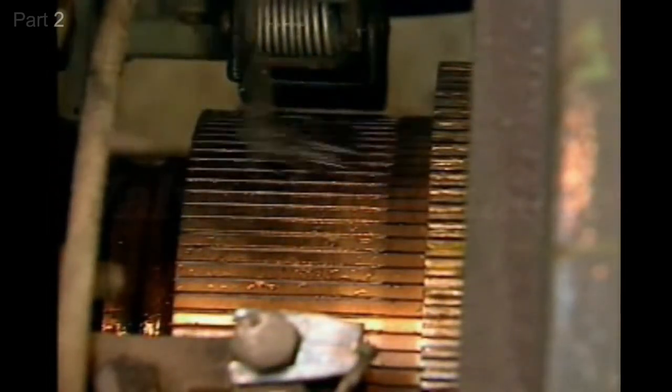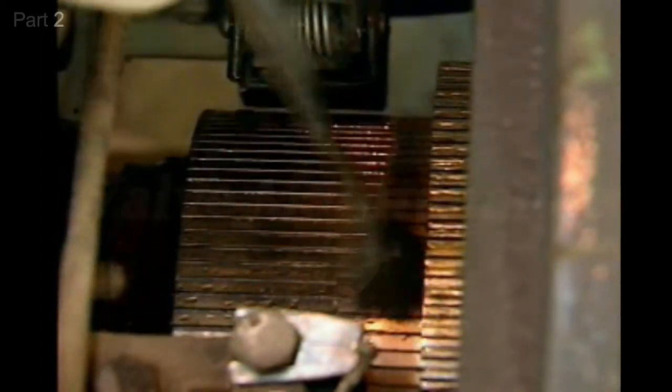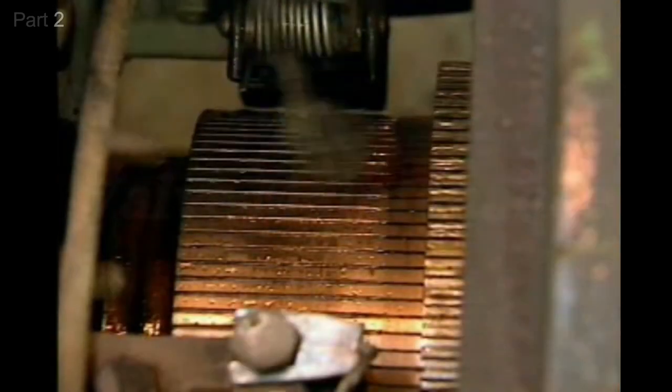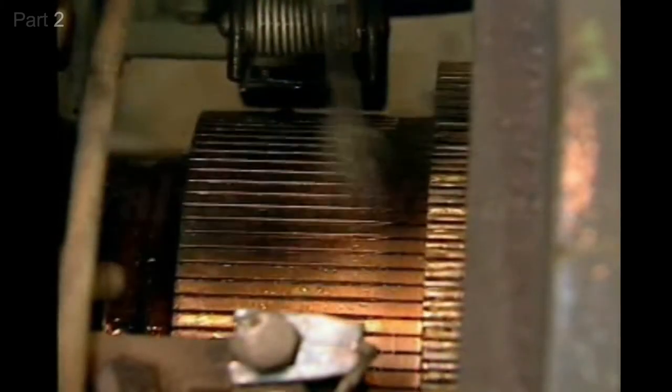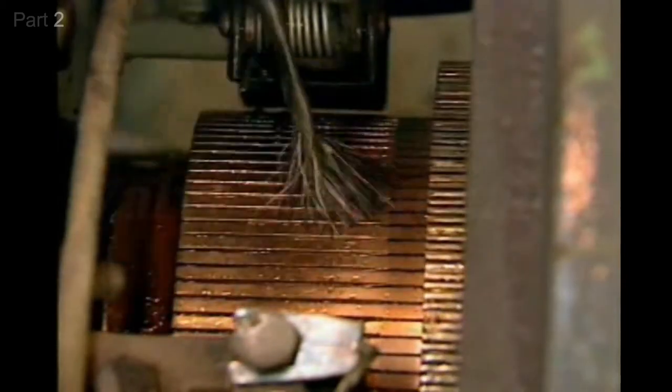Cleaning the commutator also involves cleaning the area between the segments. Care must be taken to ensure that the brown coating on the segments is not removed. This coating aids current flow between the brushes and the commutator when the motor is operating.